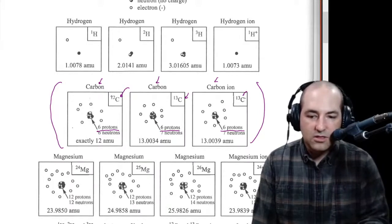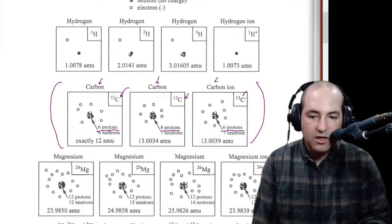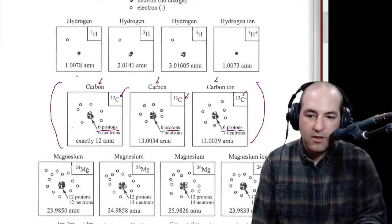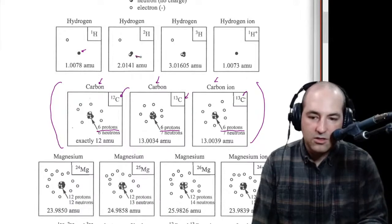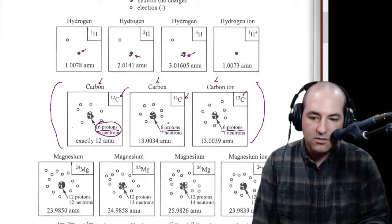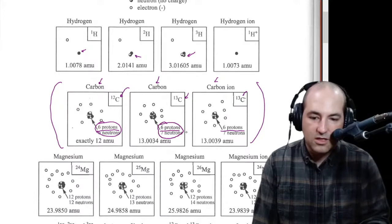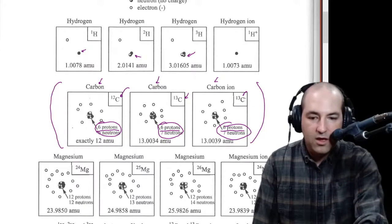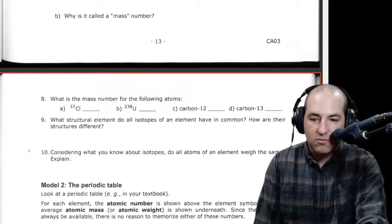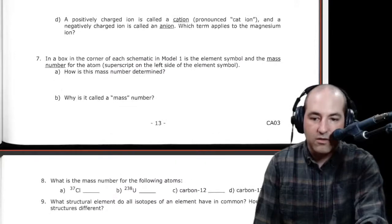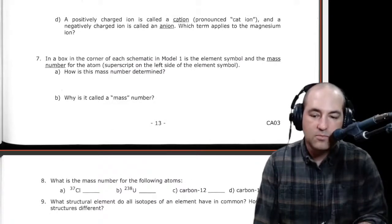And by looking at some of these simpler models and then also the more complicated ones, I think you can see that hydrogen one has one particle here. Hydrogen two has two particles here. Hydrogen three has three particles here. Carbon 12 has 12 particles. Carbon 13 has 13. Carbon 13 here, 13, and so on. So that should lead you to a conclusion there of what that mass number, where that mass number comes from or how it's determined. And you can fill that in here.